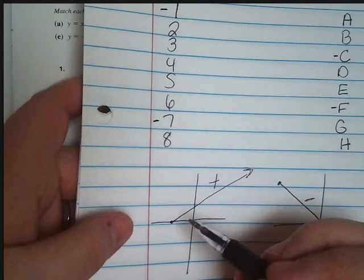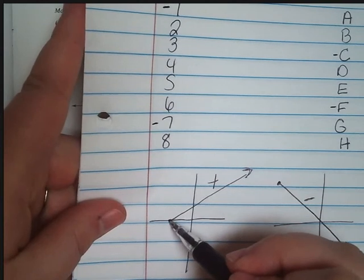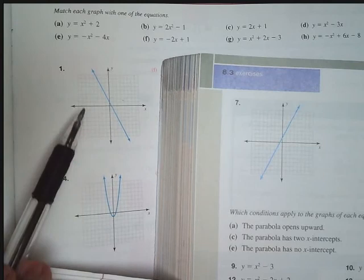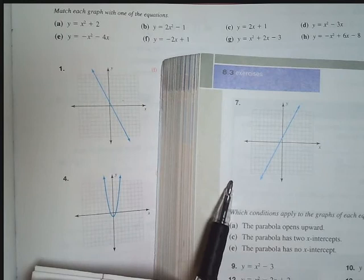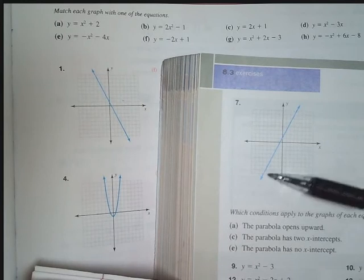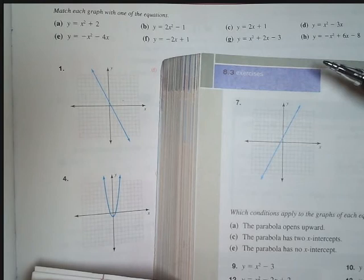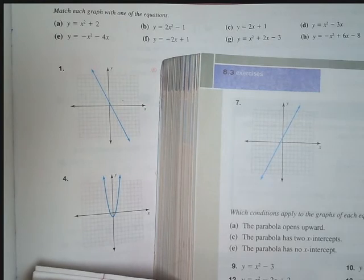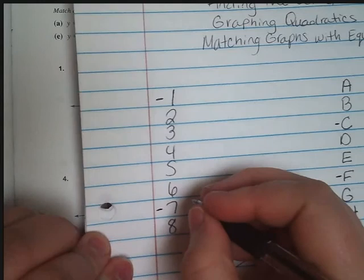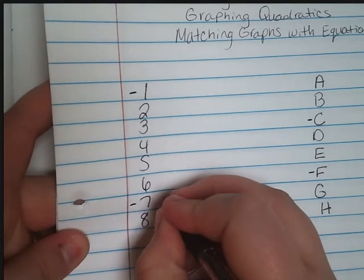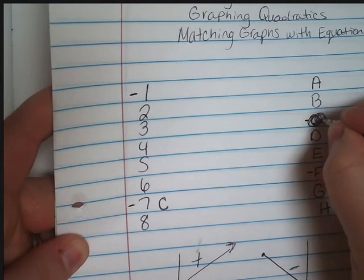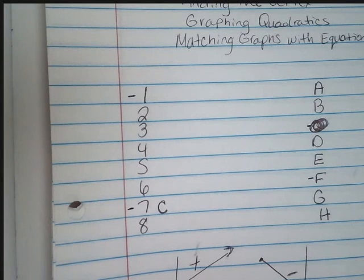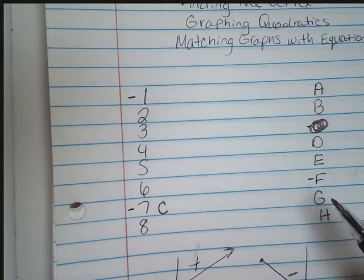We're looking for the one that starts at the bottom left and goes up to the top right. When we're looking at these graphs, number seven is the positive graph because it starts down here and it works its way up. So the positive slope would be C. So we say that number seven is C. I'm going to cross my C out because we've already used it.